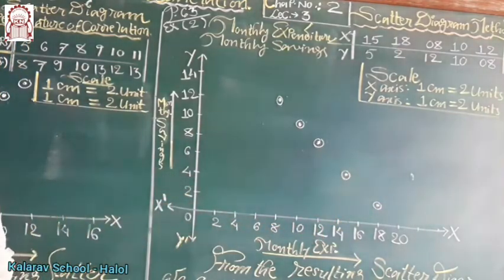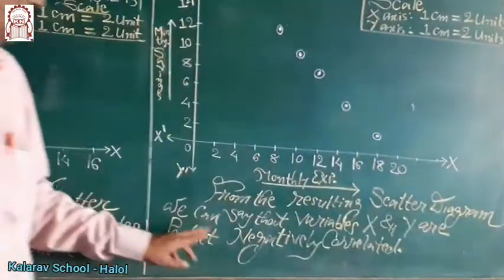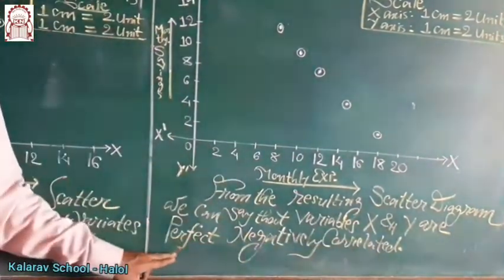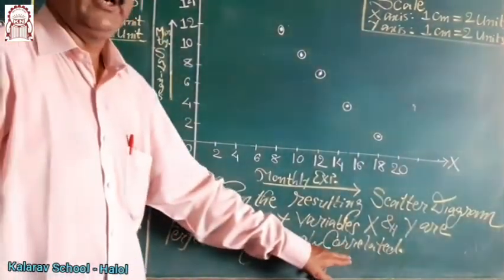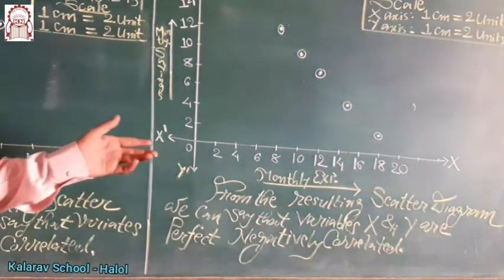Therefore, the relation is said to be perfect negative and the value of r is minus 1. From the resulting scatter diagram, we can say that variables x and y are perfect negatively correlated. Means, the relation is perfect and the value of r is minus 1.